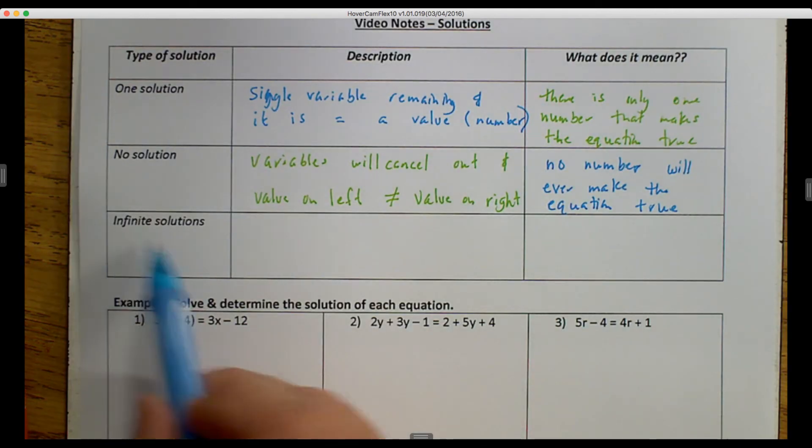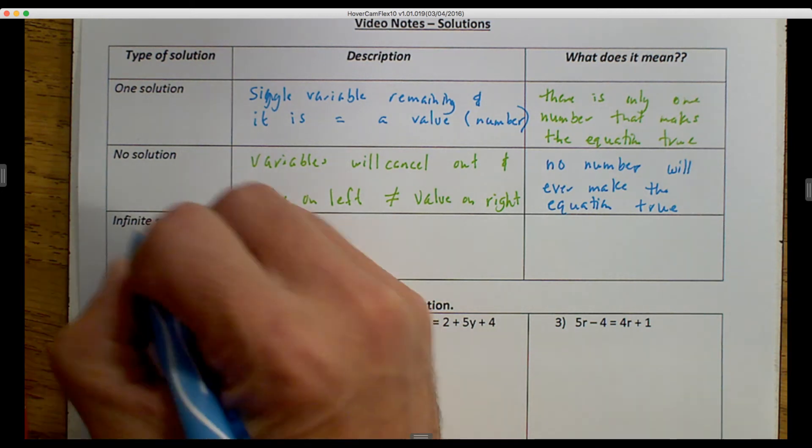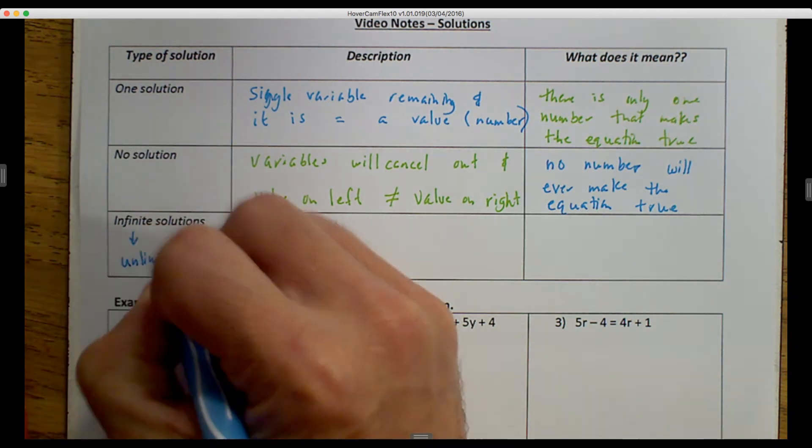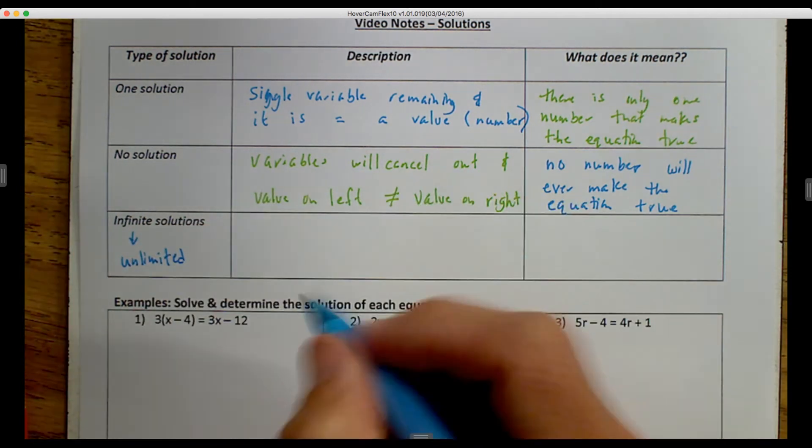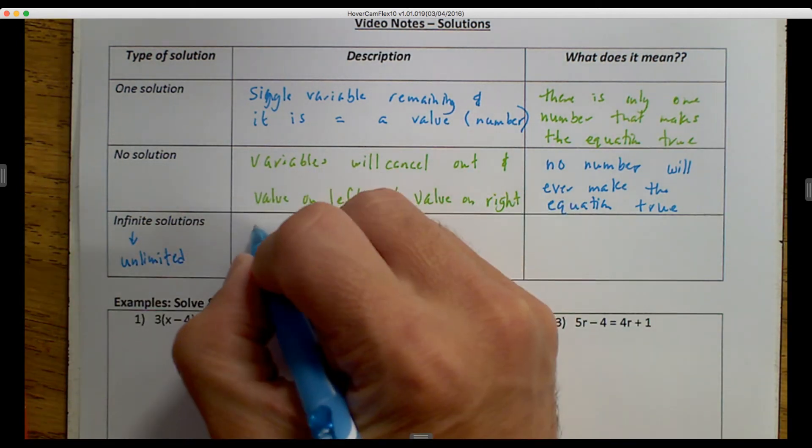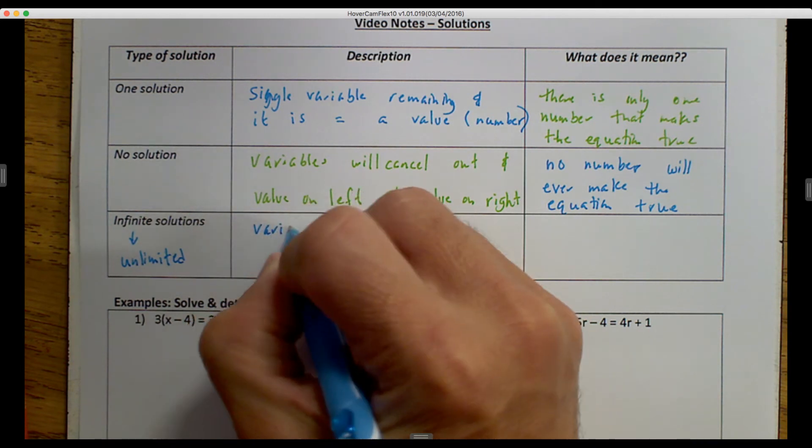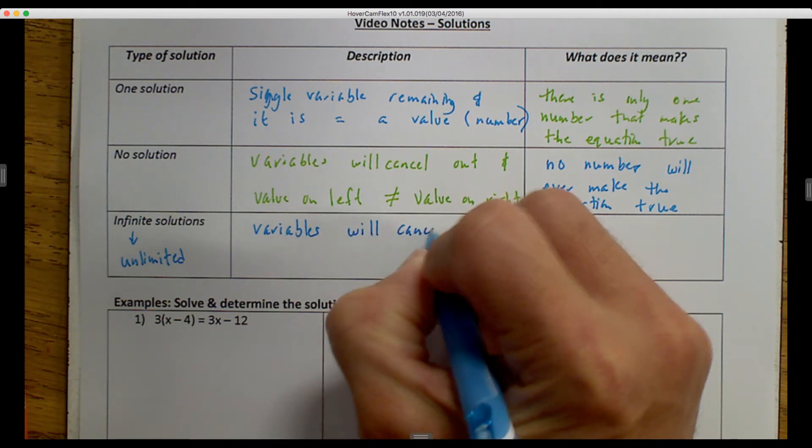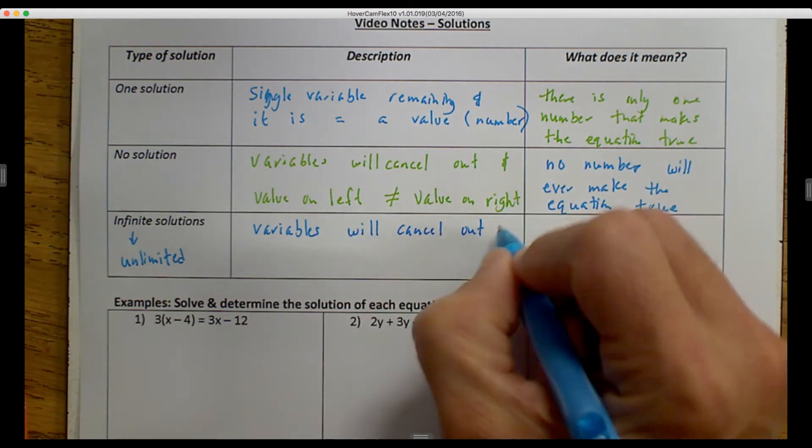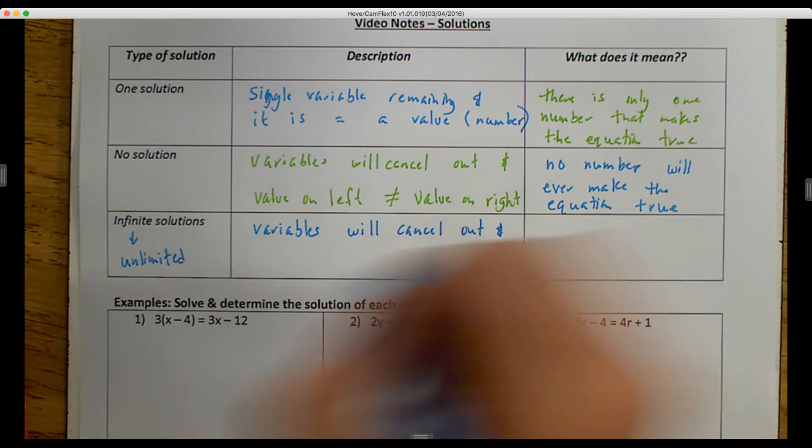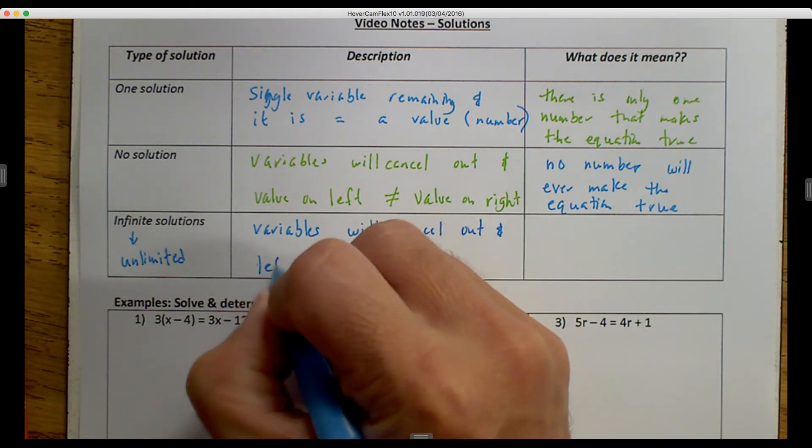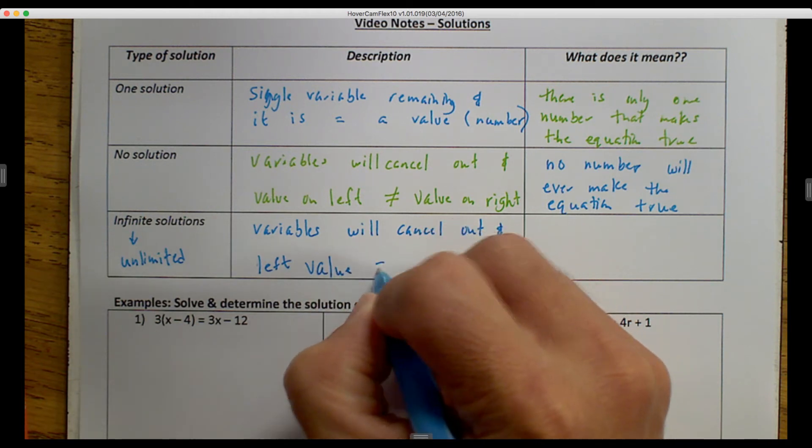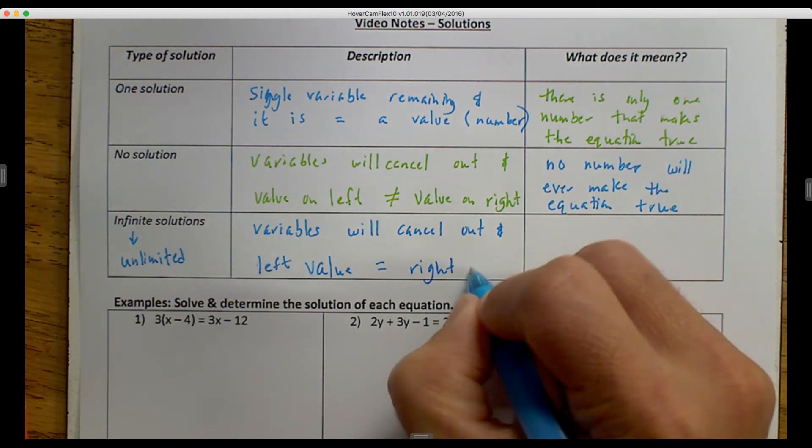The last one we're going to talk about is infinite solutions. Infinite, another word for infinite would be unlimited. So infinite solutions is similar to no solution, wherein the variables will cancel out, and our left value does equal the right value.